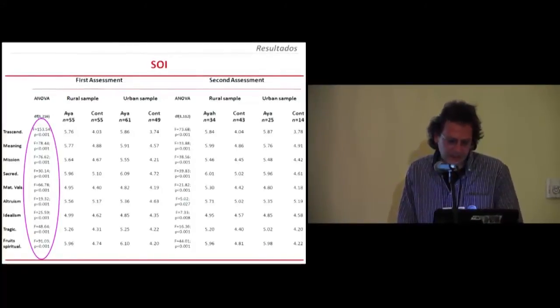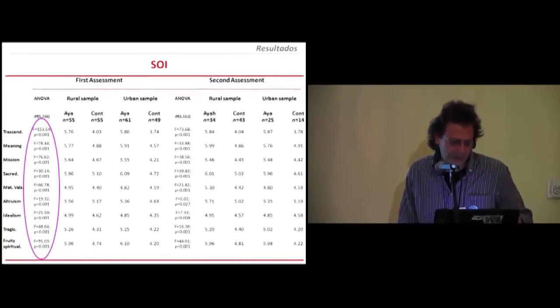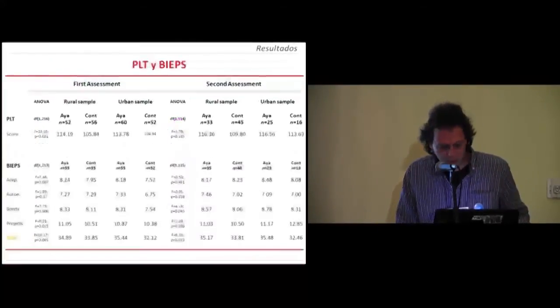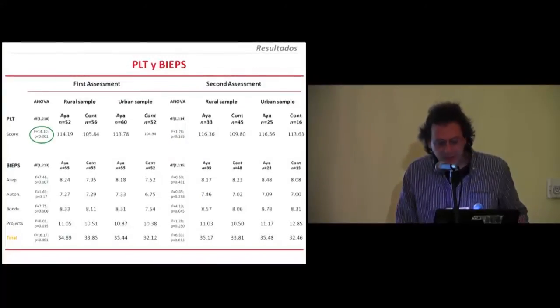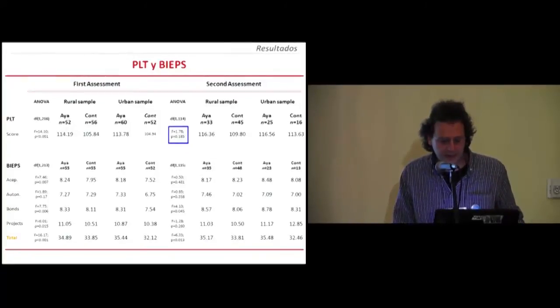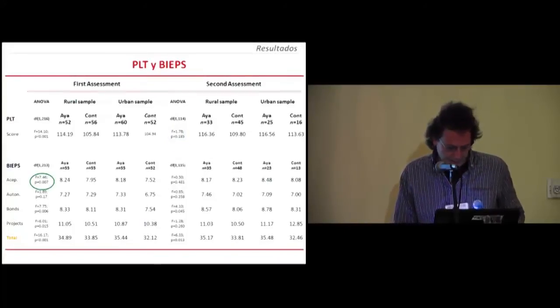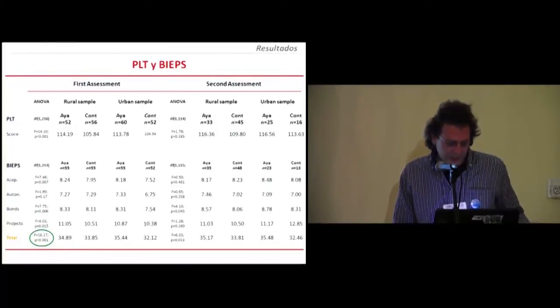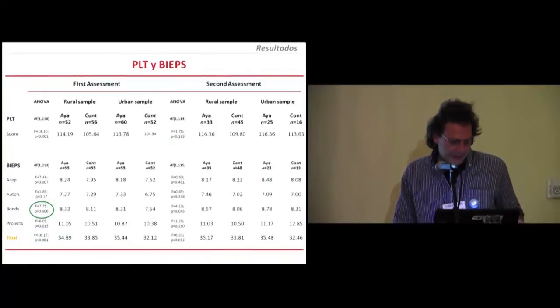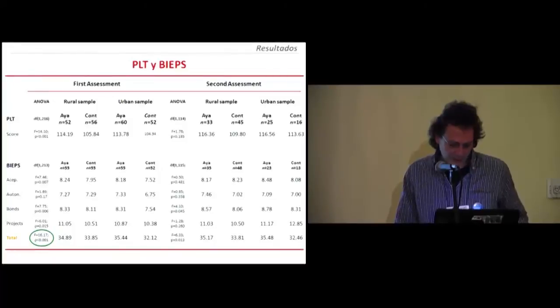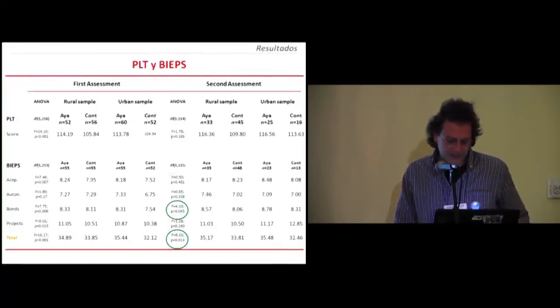As could be expected, in the Spiritual Orientation Inventory, the ayahuasca groups scored higher than the control groups. In purpose of life, they also scored higher, although in the second evaluation, the statistical difference disappeared, maybe because the sample was smaller. The same for psychological well-being, where in acceptance, psychosocial bonds, projects, and in the total scale, the ayahuasca groups scored better than the control groups. Some of the differences disappeared, but other ones were maintained on time.